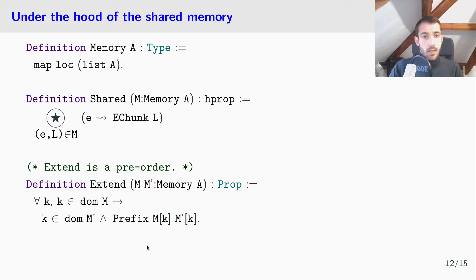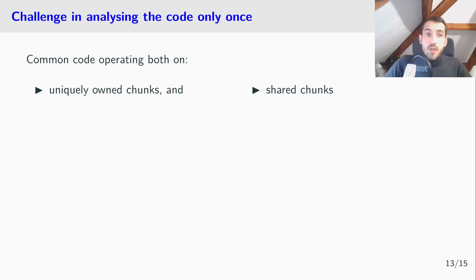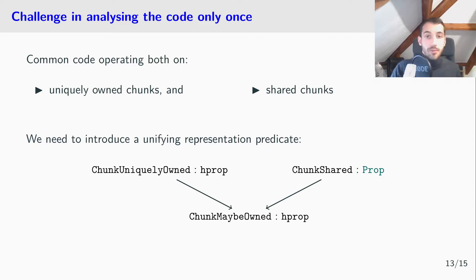Now let me show you a last challenge in the proof, because we have common code operating both on uniquely owned chunks and shared chunks, and we want to analyze the code only once. So we need to introduce unifying representation predicates. For example, for chunks, we have a heap predicate for uniquely owned chunks, a predicate in prop for shared chunks, and we introduce a new predicate which handles both cases, chunk_may_be_owned, a heap predicate, and specify and verify the code using this predicate, and derive two sets of specifications for the uniquely owned case and for the shared case.